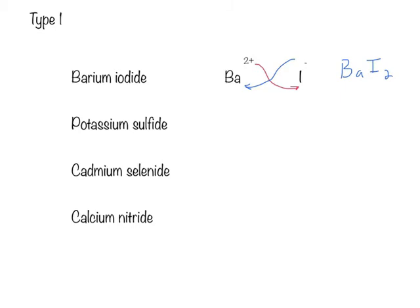Next, we're going to do potassium sulfide. Starting similarly, we find that potassium is a positive 1, and the sulfide is a negative 2. We're going to make the superscript of one become the subscript of the other. That gives us K2S.